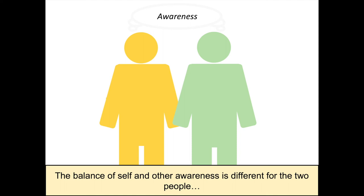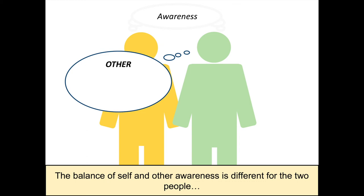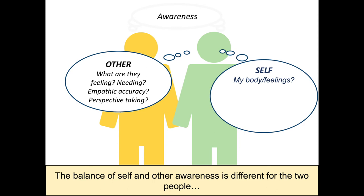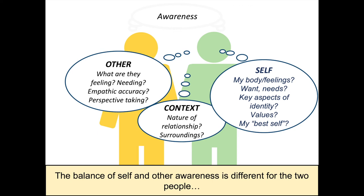From the perspective of the other person, the balance of self and other awareness is different. For the loving person, the primary focus is on other awareness — the loving person's primary awareness is of the courageous person: what is this person feeling and needing? One way to look at this is to use the term empathic accuracy: am I having accurate empathy for the feelings of the courageous person? That empathic accuracy can really help me respond well. Am I able to take their perspective and understand what they're feeling and thinking? Self-awareness is also important for the loving person — awareness of my body, my feelings, my wants, my needs, key aspects of identity, values, my best self. And awareness of the context, the nature of the relationship and the surroundings, is also important.